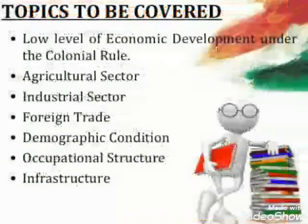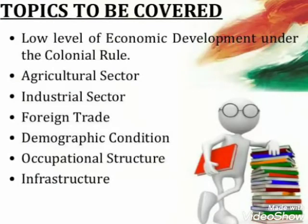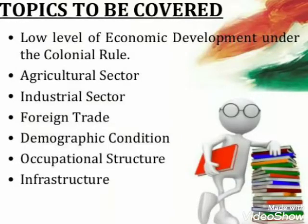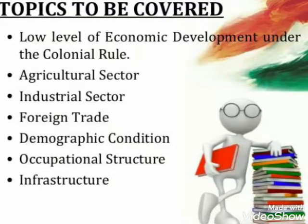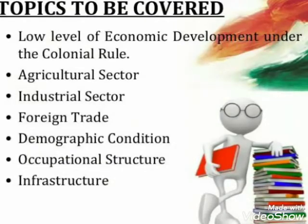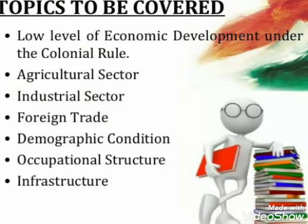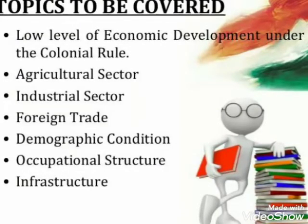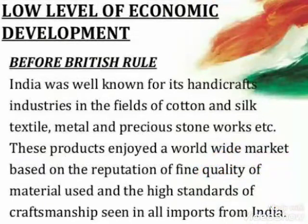Under this chapter, the topics we will be covering are: first, the low level of economic development under colonial rule; then the agriculture sector; then the industrial sector; foreign trade; next, demographic conditions; then occupational structure; and the last will be infrastructure. So let's start with the first subtopic — the low level of economic development under colonial rule.